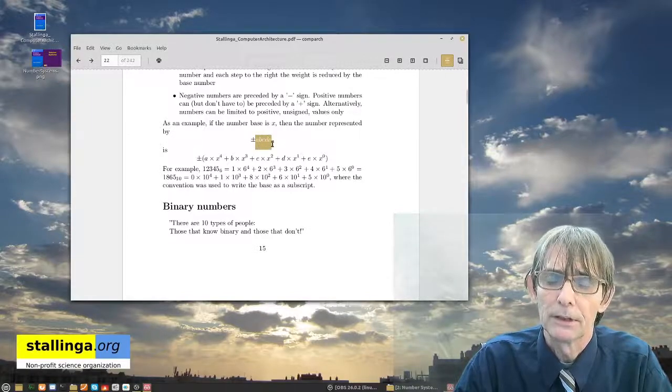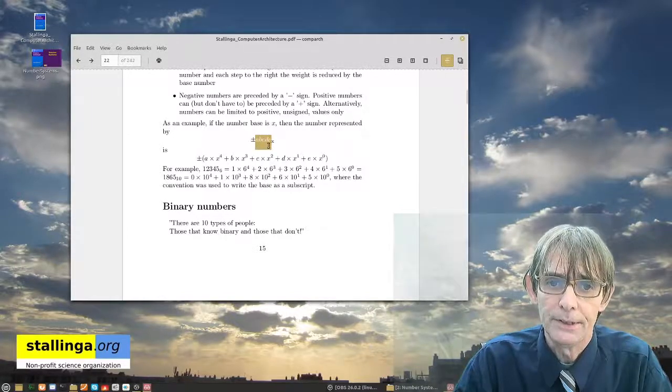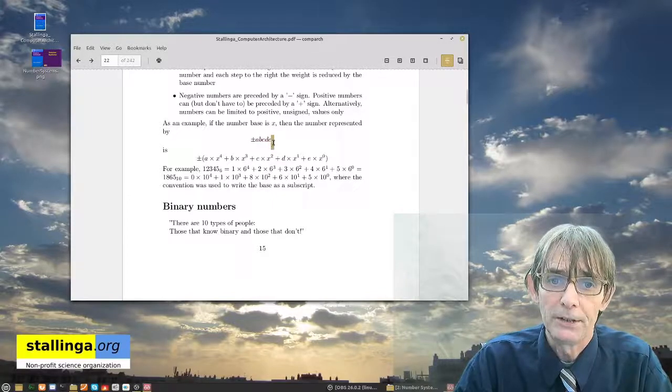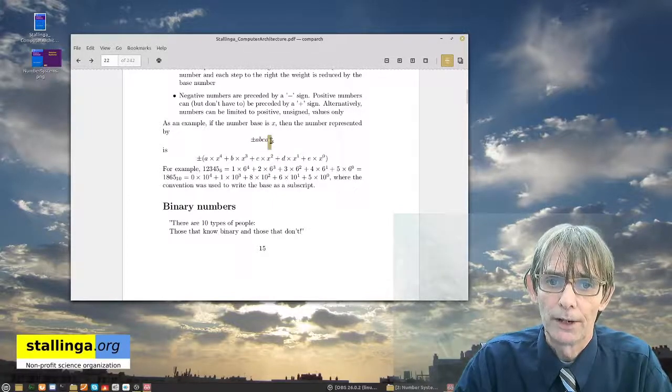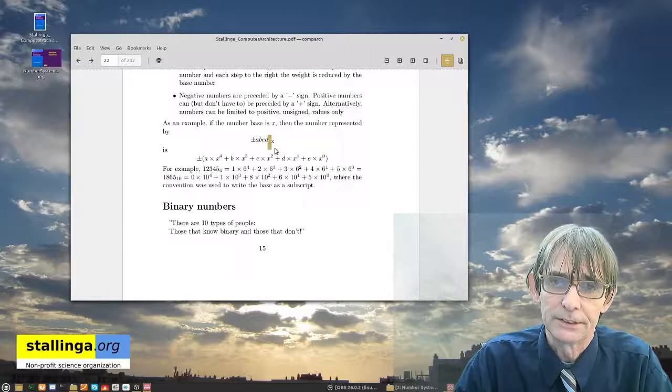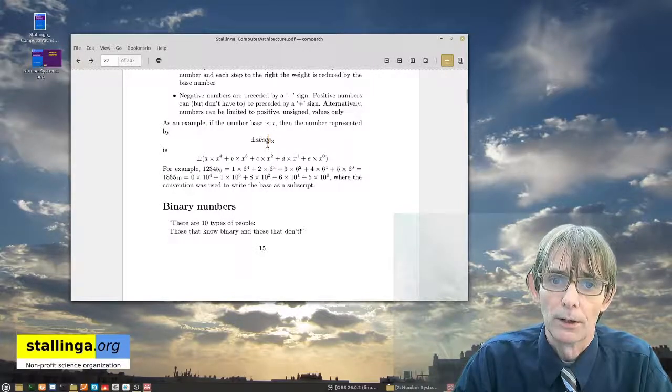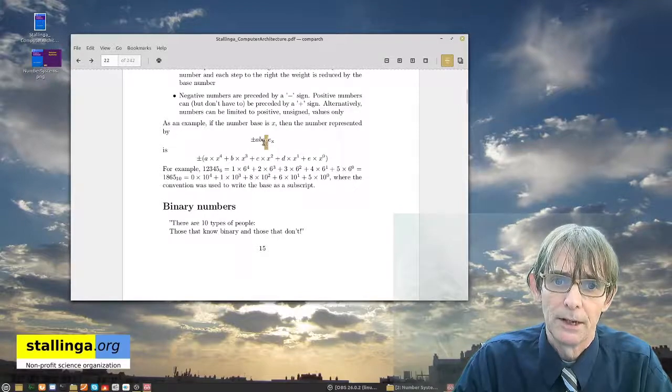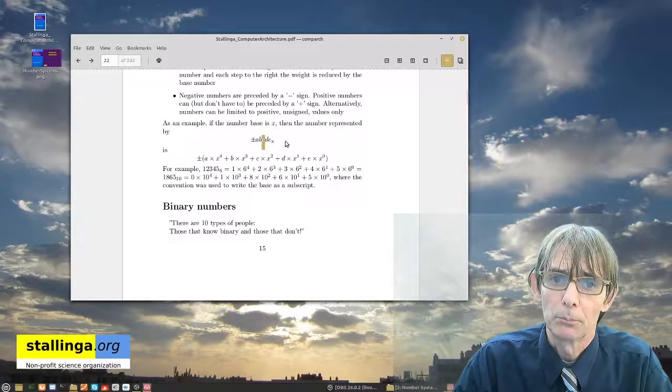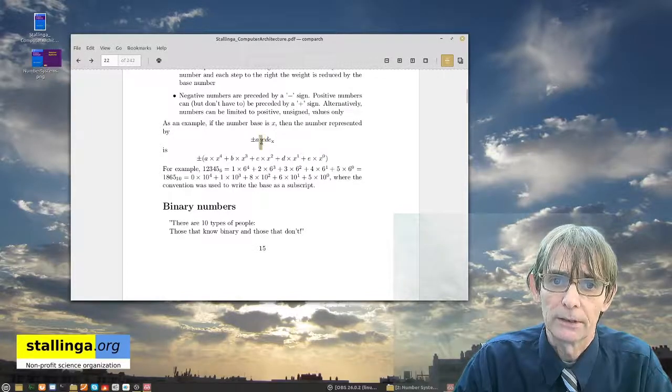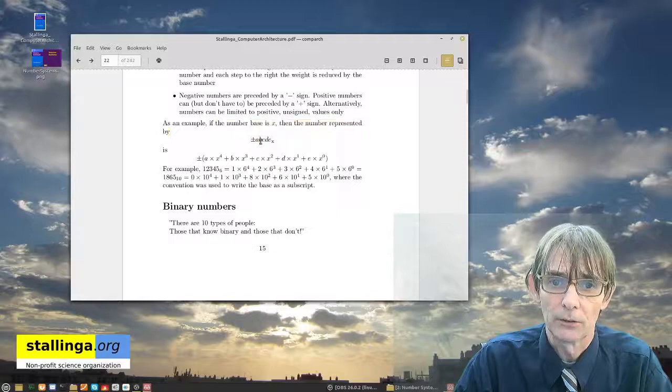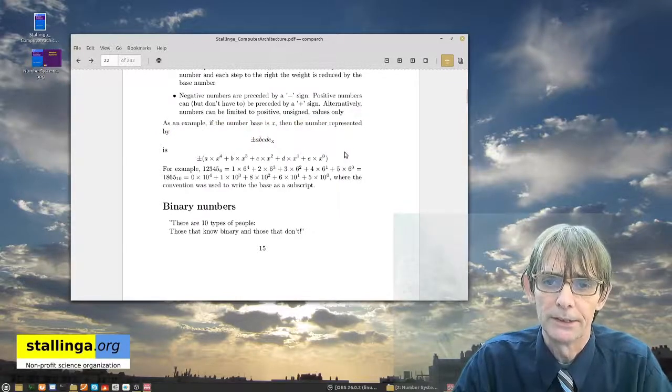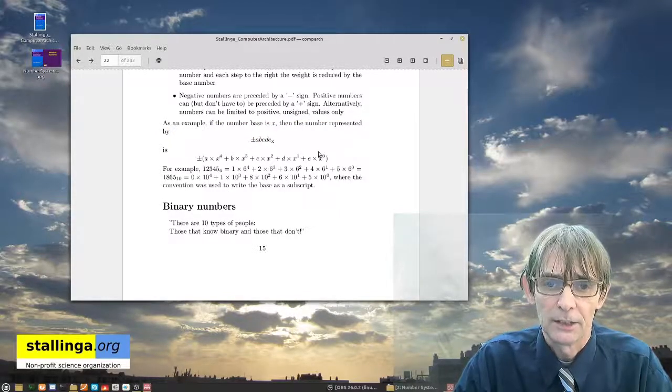Imagine you have the number ABCDE, so you have five digits in a base of X, then this one on the right, the least significant digit, is multiplied by one and the one next to it is multiplied by the base and the one next to that is multiplied by the base squared and the one next to that is multiplied by the base cubed and so on. We can actually add as many digits in front of it as we want.